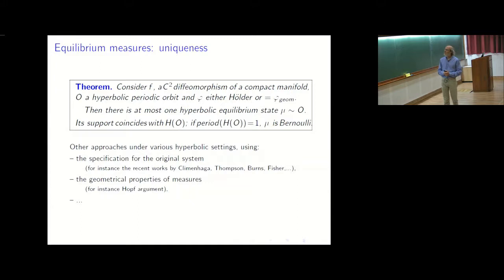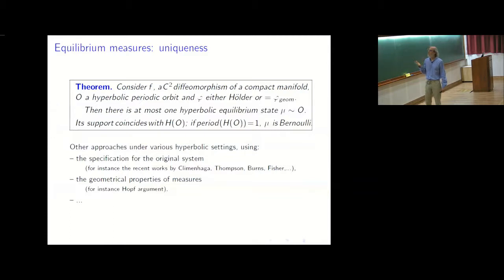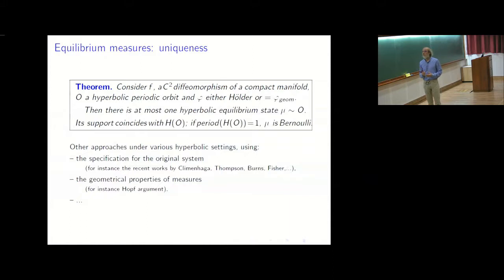You fix the homoclinic class associated to a hyperbolic periodic orbit O and consider a potential. You need an assumption on the potential: either it is Hölder continuous, or it is only measurable but is the geometrical potential introduced before. Under this condition there can exist at most one equilibrium state which is hyperbolic and homoclinically related to the hyperbolic periodic orbit O, and more: the support coincides with the whole class.